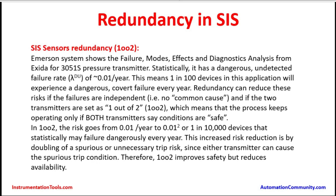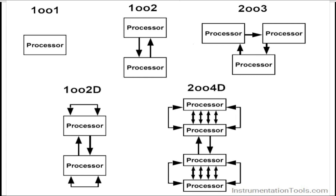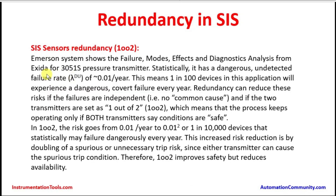This is a study by Emerson Systems, who are among the largest manufacturers of different types of sensors used in safety instrumented system applications as well as in process measurements. Emerson shows failure modes, effects, and diagnostics analysis from Exida — an agency that does certification for transmitters and final elements. For the 3051S pressure transmitter, statistically it has a dangerous undetected failure rate, lambda du, of approximately 0.01 per year. This means one in every hundred devices in this application will experience a dangerous covert failure every year.